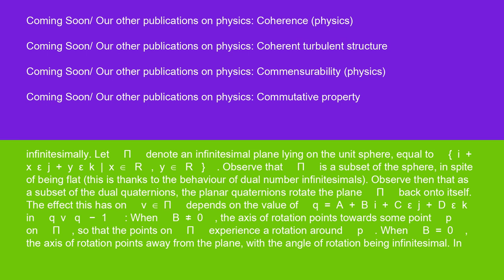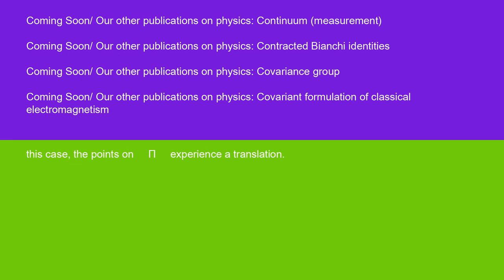This is thanks to the behavior of dual number infinitesimals. Observe then that as a subset of the dual quaternions, the planar quaternions rotate the plane pi back onto itself. The effect this has on v in pi depends on the value of q equals A plus Bi plus C epsilon J plus D epsilon K in QVQ^-1. When B is not equal to 0, the axis of rotation points towards some point p on pi, so that the points on pi experience a rotation around p. When B equals 0, the axis of rotation points away from the plane, with the angle of rotation being infinitesimal. In this case, the points on pi experience a translation.